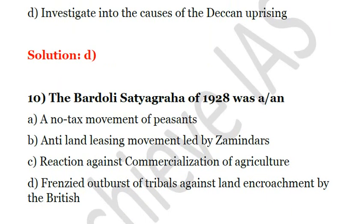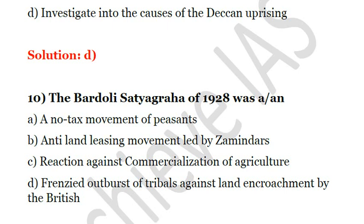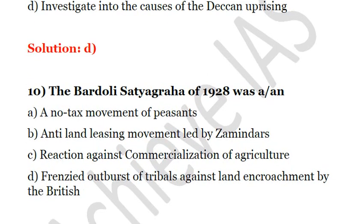Question 10: The Bardoli Satyagraha of 1928 was — A, a no-tax movement of peasants; B, an anti-land-leasing movement led by zamindars; C, a reaction against commercialization of agriculture; D, a frenzied outburst of tribals against land encroachment by the British. The answer is A: a no-tax movement of peasants. There was famine as well as floods, causing crop failure, so peasants lacked the ability to pay taxes. However, the Bombay Presidency government increased the taxes anyway. Under Sardar Patel, this became the Bardoli Satyagraha of 1928. The answer is A.